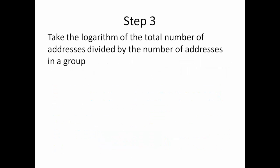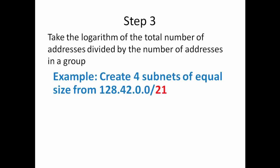Step 3 says we're going to take the logarithm of the total number of addresses divided by the number of addresses in each group. That sounds complicated. It's really not. So let's go with our example again. We have our total number of addresses, T, is 2,048. In one single group we have 512 addresses. Now we need to come up with P, our prefix. We don't know what that is.